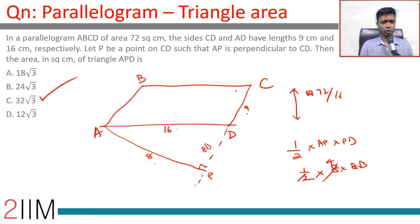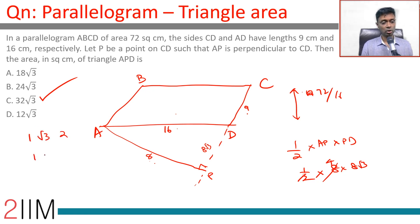The key steps are: first find the altitude, then use the right triangle with Pythagorean theorem and the 1 : √3 : 2 ratio. You should be very comfortable with the 1 : √3 : 2 triangle, which is one half of an equilateral triangle, and the 1 : 1 : √2 triangle, which is an isosceles right angle triangle or one half of a square.